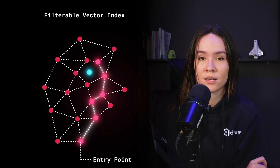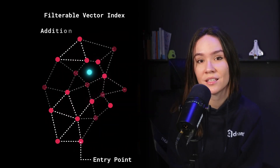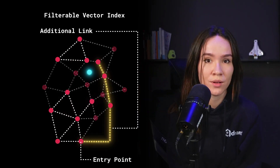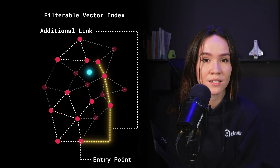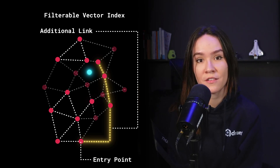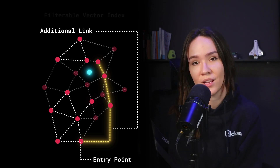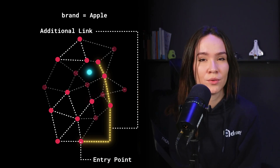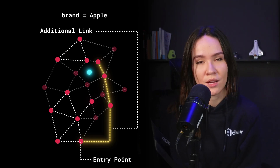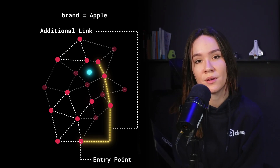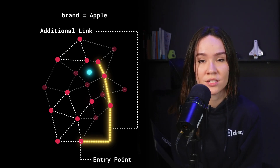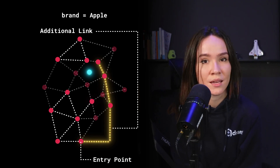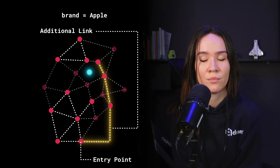We can guarantee that the HNSW will remain connected by creating additional edges that maintain connectivity under filtering. These subgraphs are built using the payload. So if you have a point with the payload brand equal to Apple, then Qdrant can build a subgraph connecting just the points that also have the same payload brand equal to Apple, and traversal will work fine within that group.